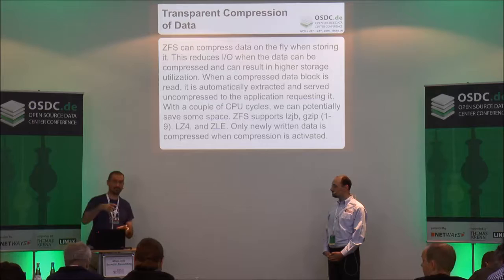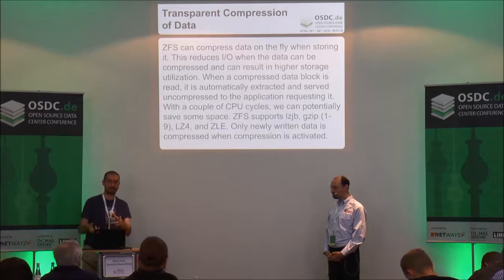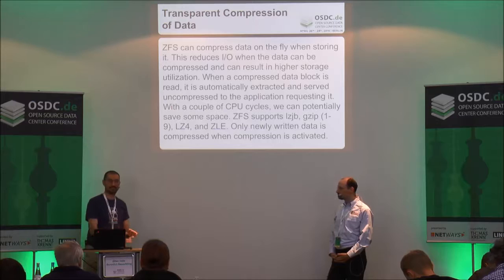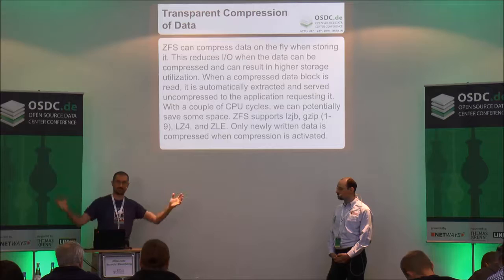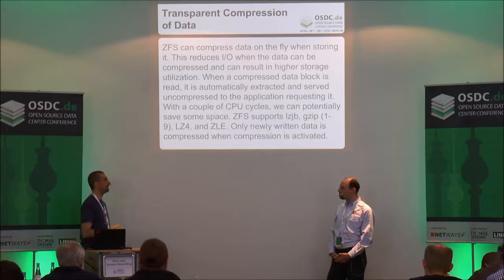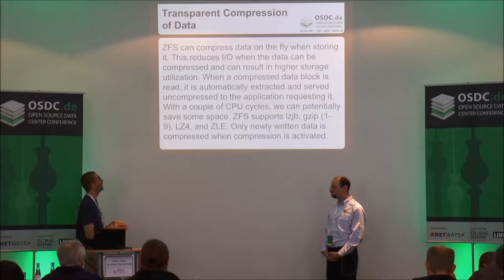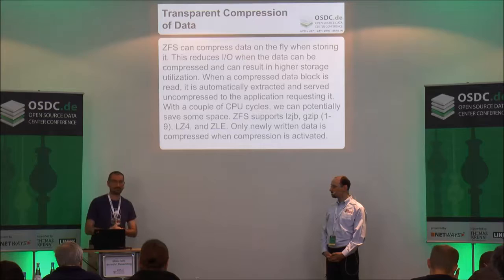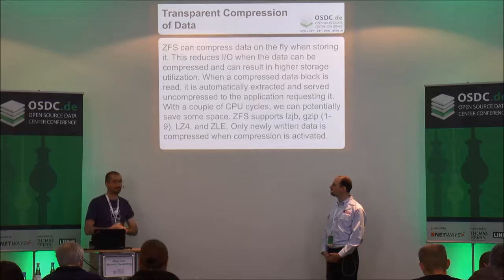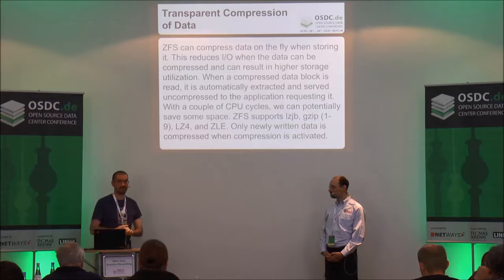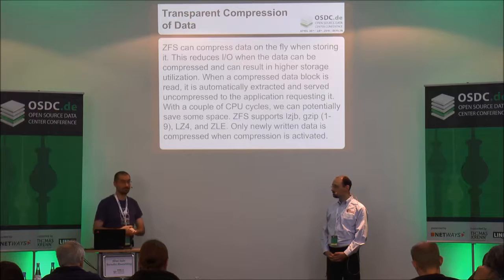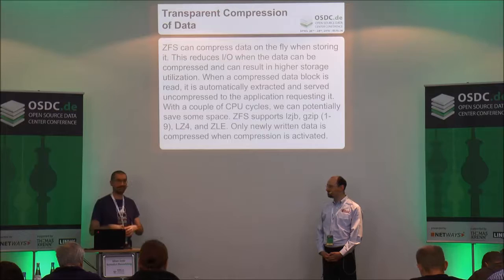Talking more about compression: as data is written into the ZFS buffer, it can be compressed if written to a dataset where compression is enabled. When written to disk, you can end up with higher throughput because you've compressed a large amount of data into a smaller amount. You get that benefit back on reads too — reading 100 megabytes of compressed data that expands to 200 megabytes means you've effectively read twice as much per second. The newer LZ4 is recommended for almost everything — even on a laptop processor it can compress about 1.5 gigabytes per second per core.